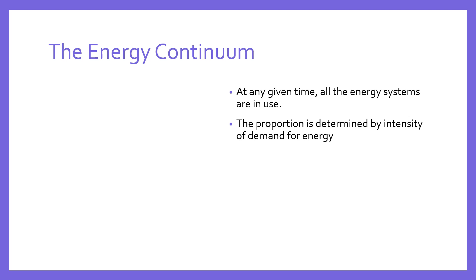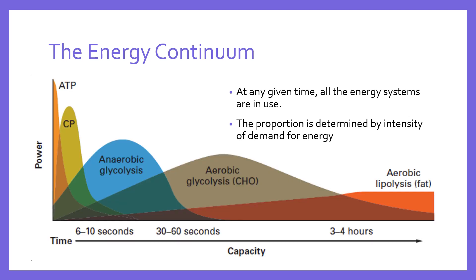But to reiterate, at any given time all the systems are in use — it just may be that the proportion shifts between the systems. So let's try and explain this graphically. This is what it looks like on a graph. We have the various systems, and we've broken down the aerobic system here into aerobic glycolysis and aerobic lipolysis.